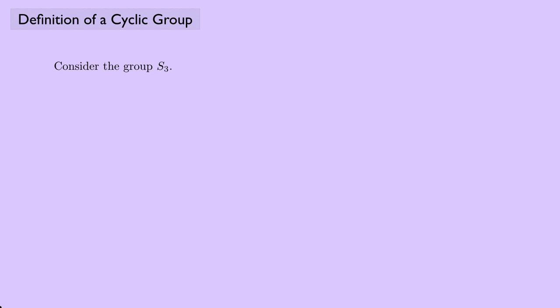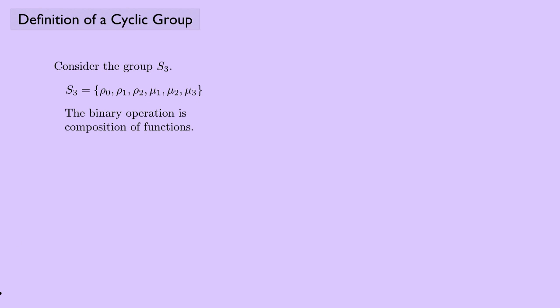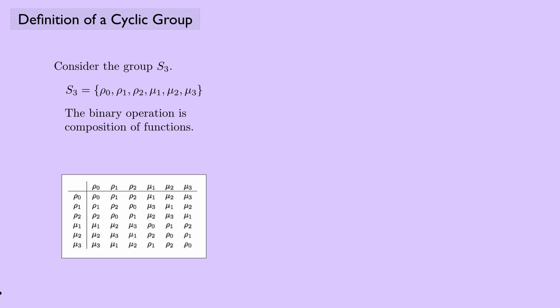Let's look at another example — the group S3. S3 consists of the symmetry operations on an equilateral triangle. Rho 0 plays the role of the identity. Rho 1 and rho 2 are the operations that rotate the triangle, and the mu's are the flips across a line of symmetry. The binary operation is composition of functions, meaning doing two of these operations in succession. Here's the group table for S3, and I want to look at the cyclic subgroups of S3. Starting with the identity, rho 0, you just have rho 0 — not very exciting.